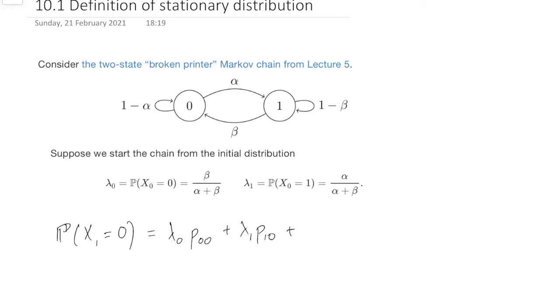The probability we start in state 0 is beta over alpha plus beta. That's given. The probability we move from 0 to 0, that's this edge here, right? So that's 1 minus alpha. And vice versa on the other one. The probability is alpha over alpha plus beta. The probability we move is that one, beta.